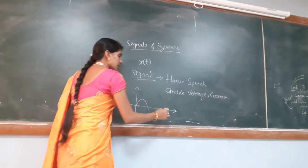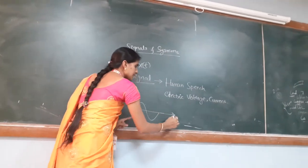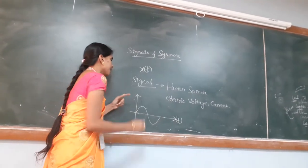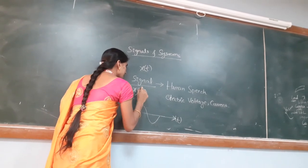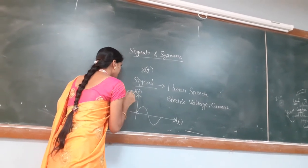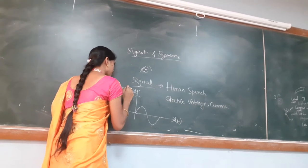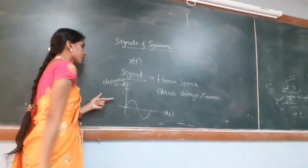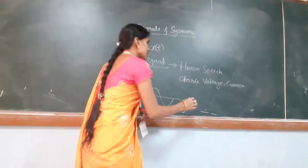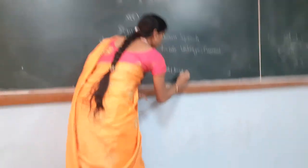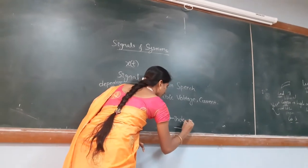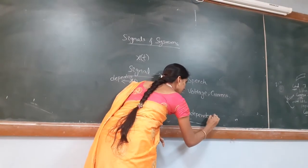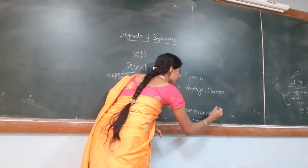We represent the signal where the x-axis is t, which is the independent variable, and x is the dependent variable. So in x(t), t is the independent variable and x is the dependent variable.